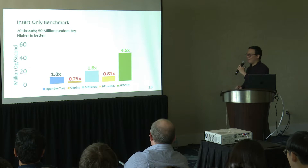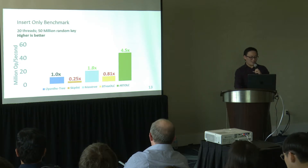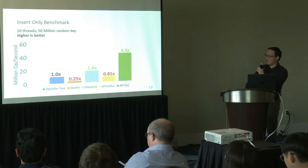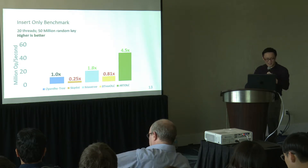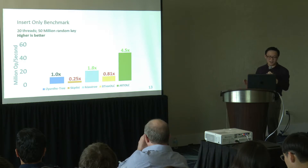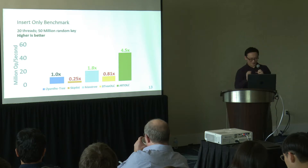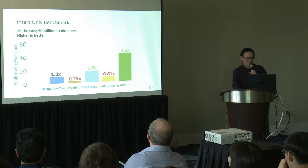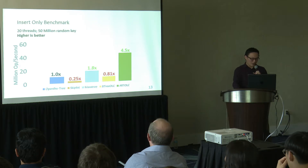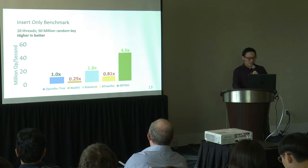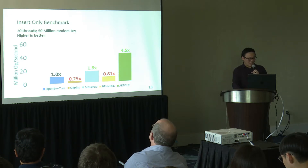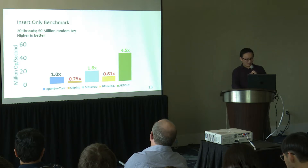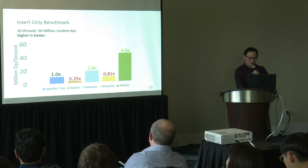For the insert-only benchmark with 20 worker threads inserting 50 million randomly generated integer keys: the Y-axis is million operations per second (throughput), higher is better; X-axis is index type. ART OLC clearly has the best performance and is 4x faster than OpenBWTree. Masstree follows at 1.8x faster. One positive for OpenBWTree is that it is about 20% faster than B+ Tree with optimistic lock coupling. The skip list is at the bottom, with only one-fourth the throughput of OpenBWTree.